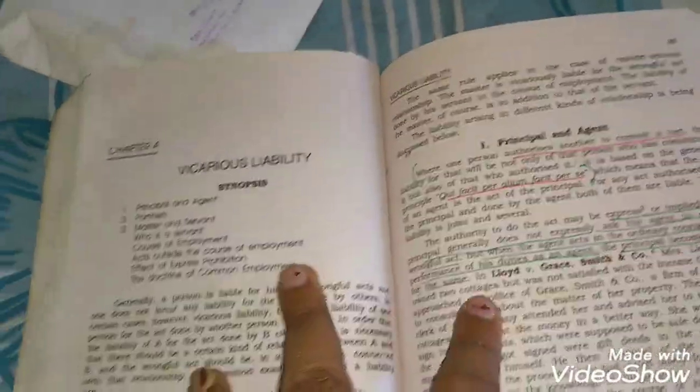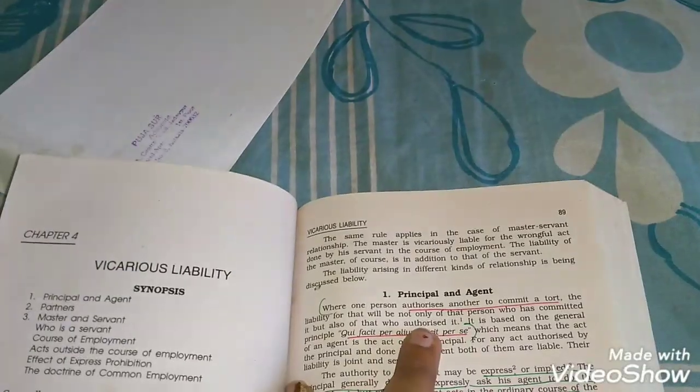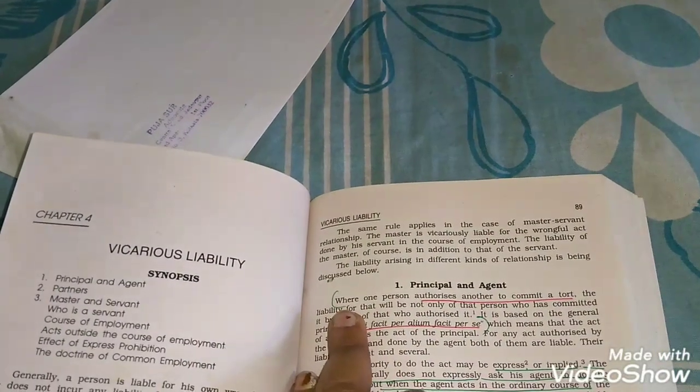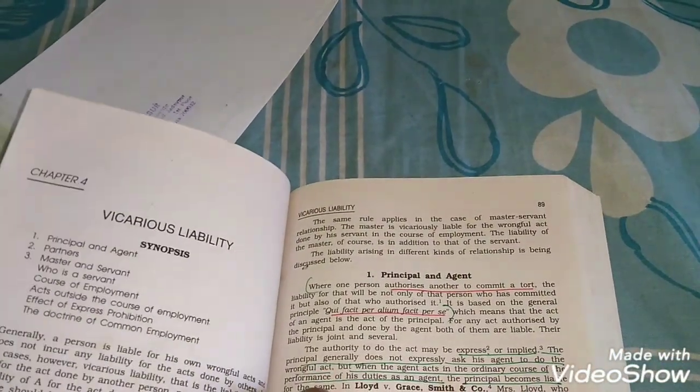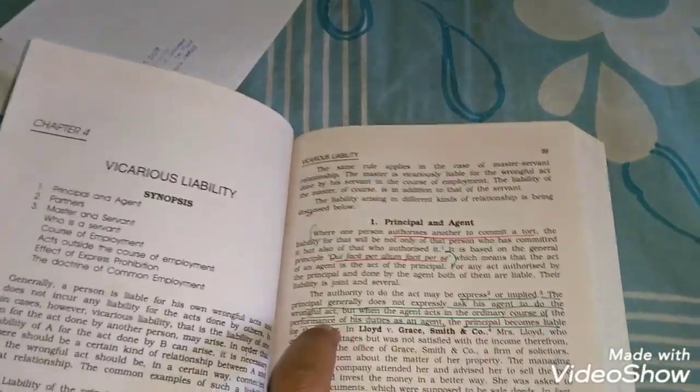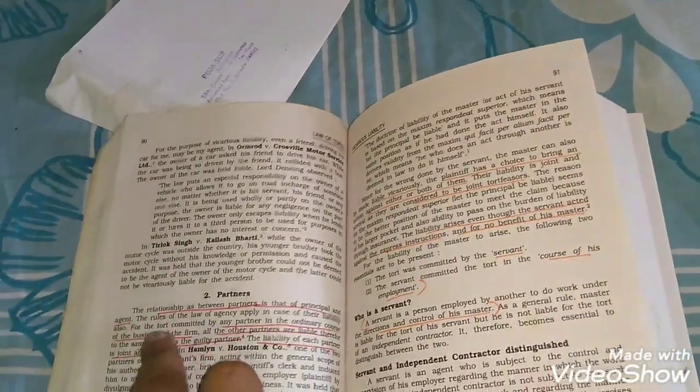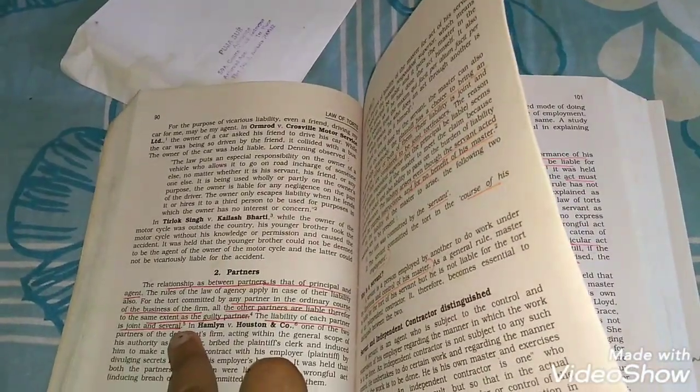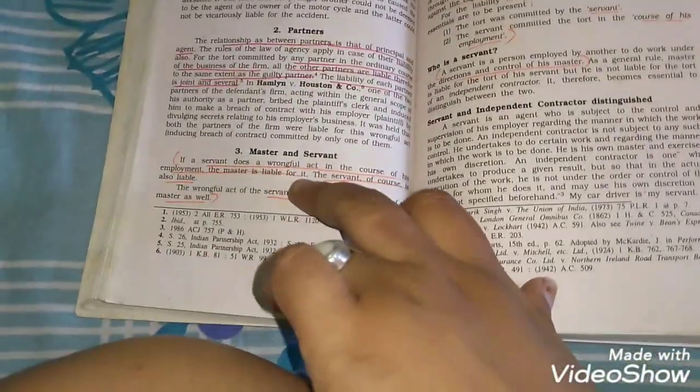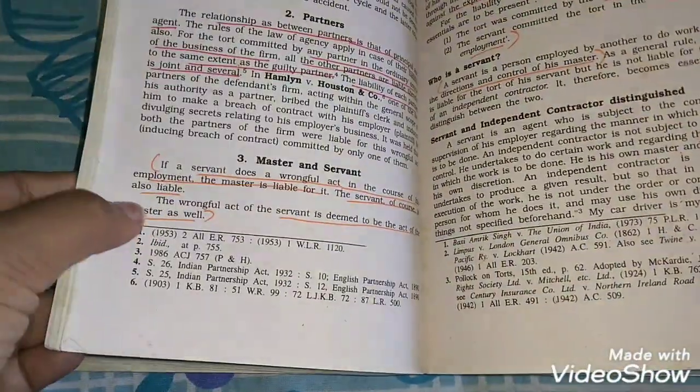Chapter 4: Vicarious Liability. Principal and agent: when one person from there to per se. Then just read the next paragraph of the authority from there to up to like, for the same. Partners: just read the first paragraph, 'the relationship' from there to joint and several. Master and servant: it's very important. If the servant from there to master as well.